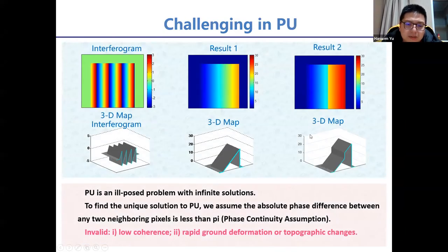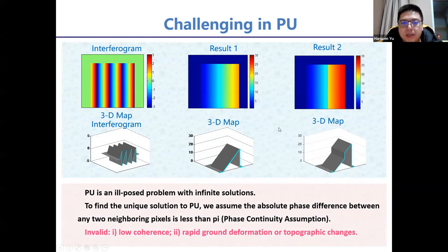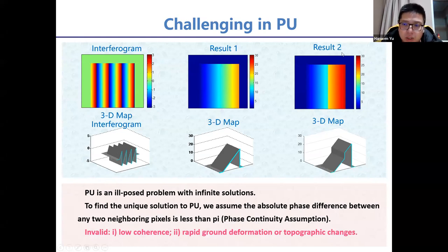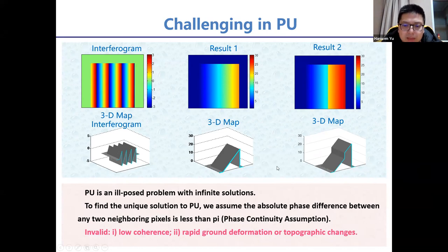Phase unwrapping is an ill-posed problem with infinite solutions. For example, given one interferogram as input, there are at least two PU results that could correspond to it, and InSAR doesn't have enough information to tell us which is correct. To find a unique solution, we typically assume the absolute phase difference between two neighboring pixels is less than pi — this is called the phase continuity assumption.